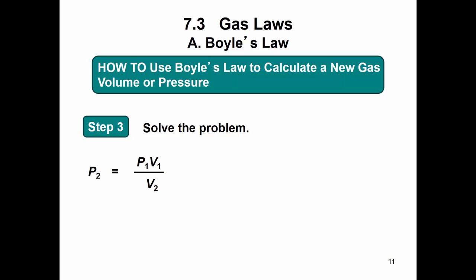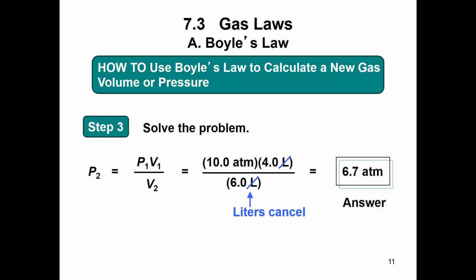So now let's solve. Here's our rearranged equation. If you were looking for V1, then you would rearrange and put V1 by itself. So it doesn't matter what's over here. It's whatever's in the problem, what it's asking you for. Our P1 was 10.0 ATM. Our V1 was 4.0 liters. And our V2 was 6.0 liters. So when we multiply those, divide by 6. Notice that our liters cancel and we're left with ATM, which is exactly what we need for our pressure unit. And so we get 6.7 ATM as the answer.